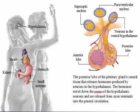The posterior lobe of the pituitary gland is neural tissue that releases hormones produced by neurons in the hypothalamus. The hormones travel down the axons of the hypothalamic neurons and are released from axon terminals into the general circulation.